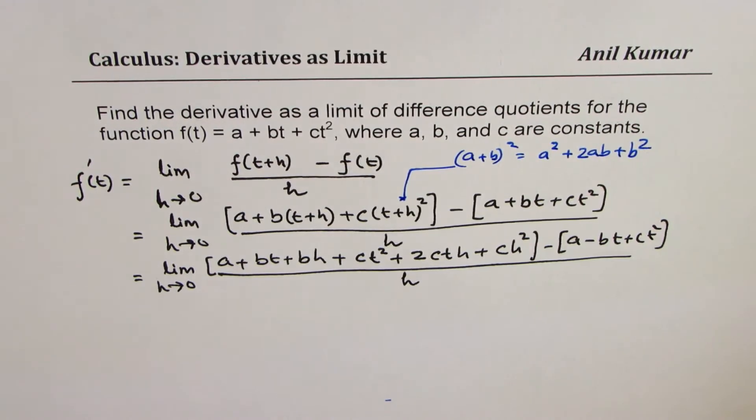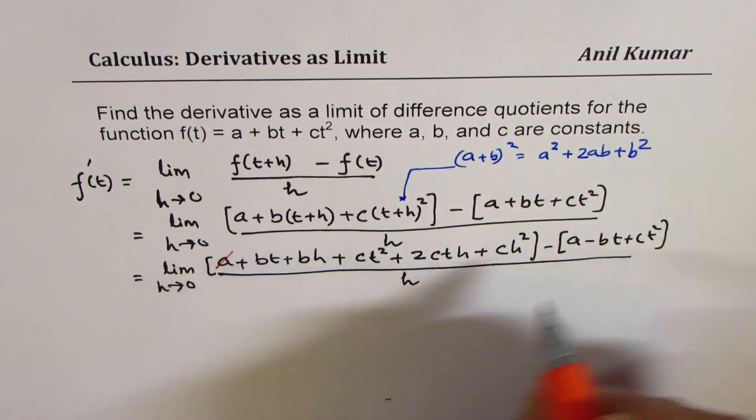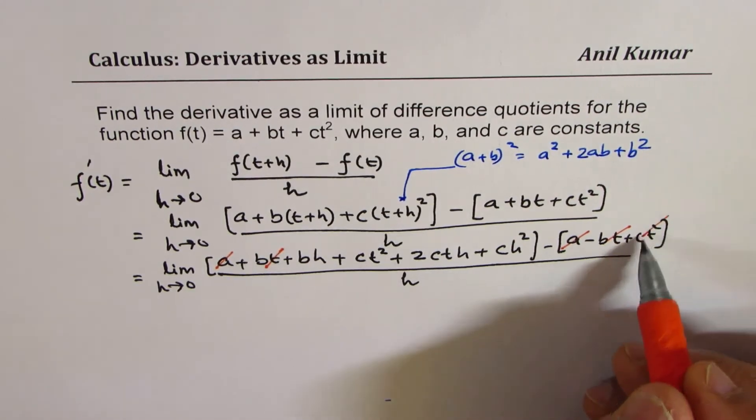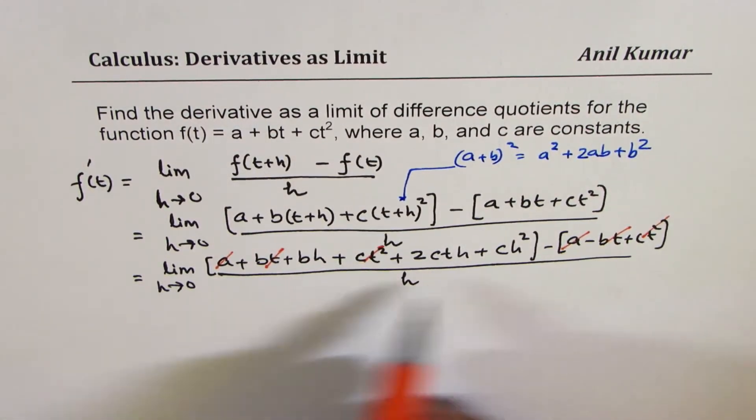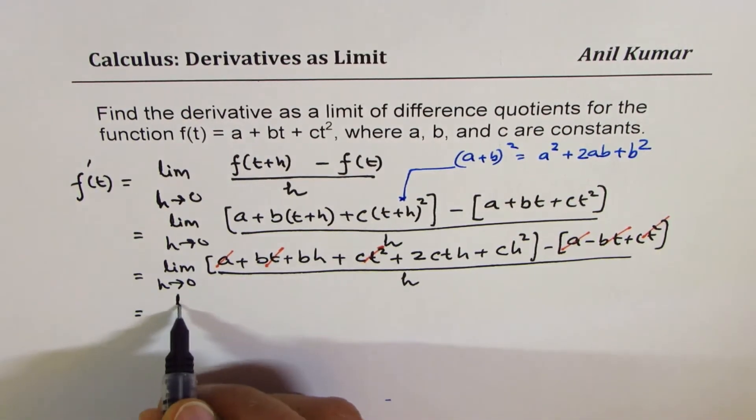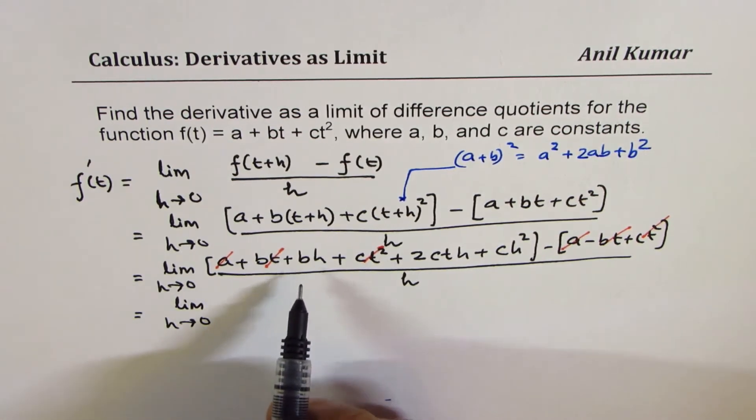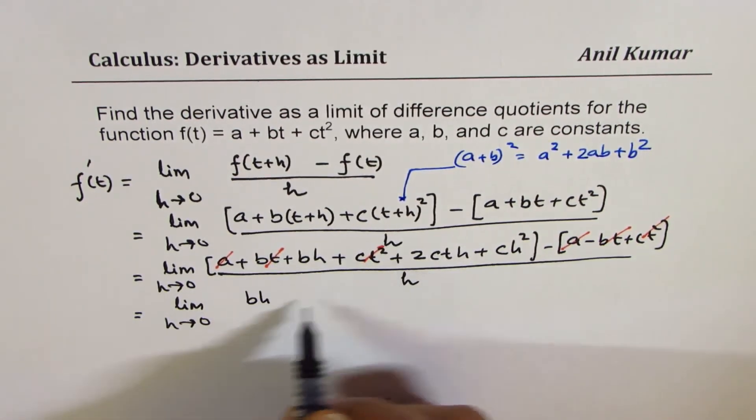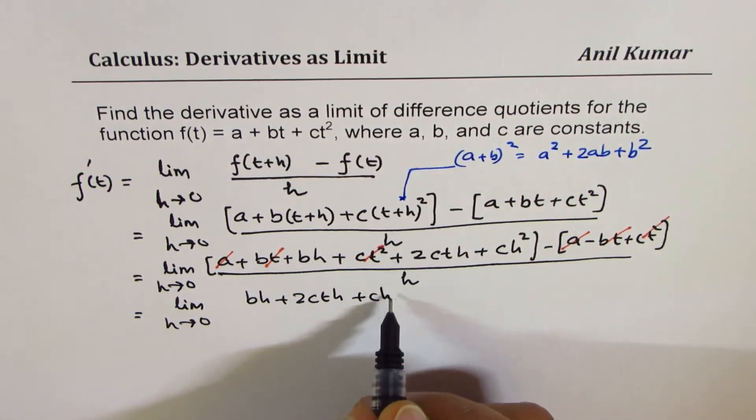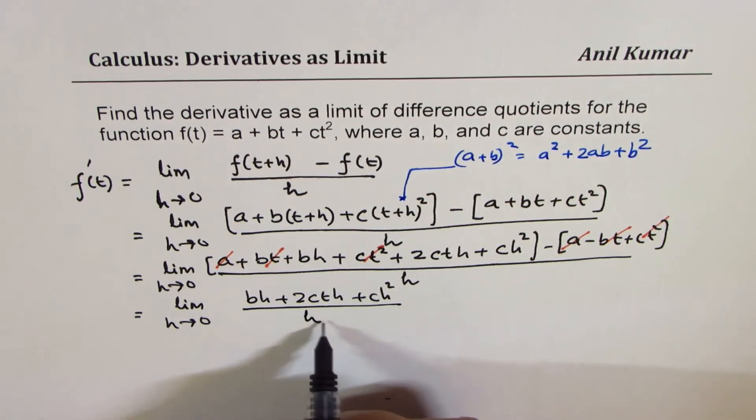What you will notice at this stage is all the terms which do not have h will cancel. These three terms, a, then we got bt, and ct square will cancel. What remains is all the terms with h, then you can take h common. Let me first rewrite what is left. We have bh plus 2cth plus ch square divided by h.